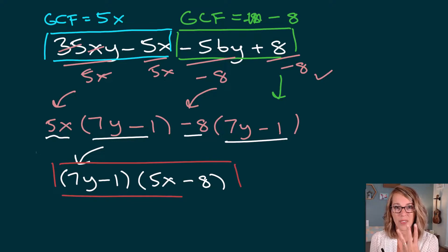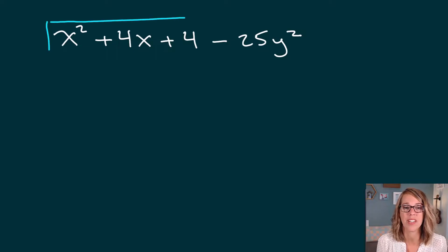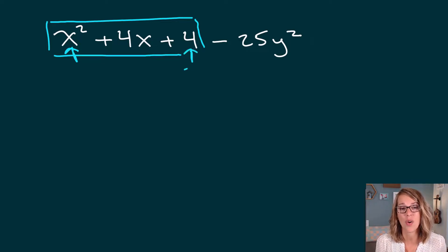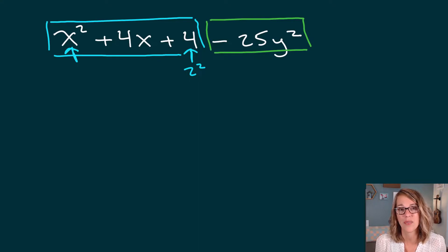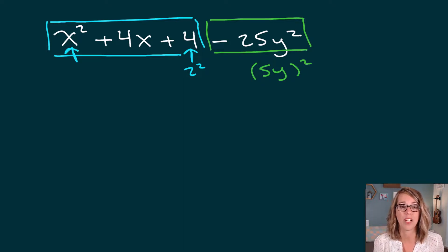In the next one, I'll show you how to group 3 terms and 1 term, with the goal of using difference of squares. This requires a bit of practice to recognize. The first three terms form a perfect square trinomial — I recognize this because I have x squared in front, my last term of that group is also a perfect square (2 squared), and I also have a perfect square at the end with a minus sign, which would be 5 and y squared.